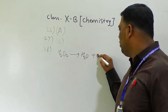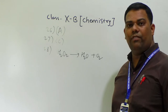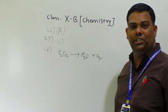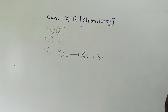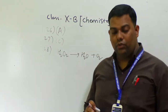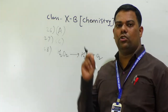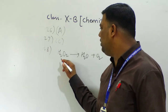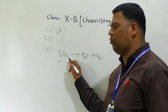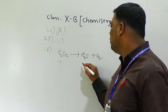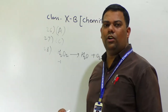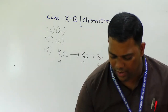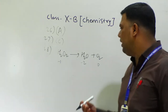H₂O₂ gives H₂O plus O₂. They give this reaction and ask: is it an example of A) oxidation, B) reduction, C) both A and B, or D) none of these? To answer this, we must know the oxidation number of oxygen in H₂O₂, which is minus one. The oxidation number of oxygen in H₂O is minus two, and in O₂ it is zero because it is in the elemental state.